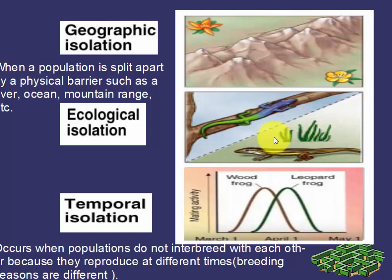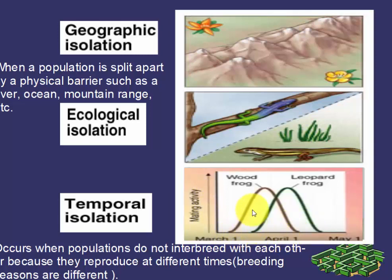The third type is temporal isolation, which we have already discussed. In this type of isolation, populations do not interbreed because they reproduce at different times — that means their breeding seasons are different. As you can see in this picture, there are two species of frog. The y-axis shows mating activity and the x-axis shows time. For the wood frog, the mating period is from March to April, and for the leopard frog it is April onwards.